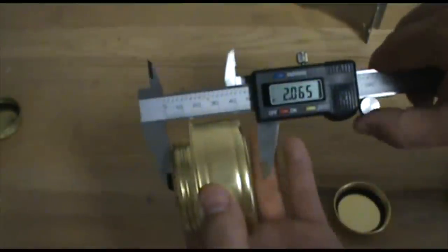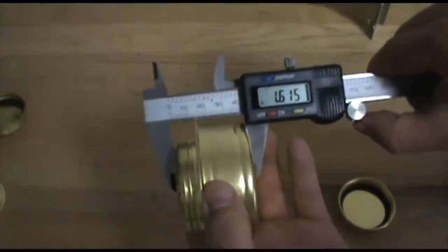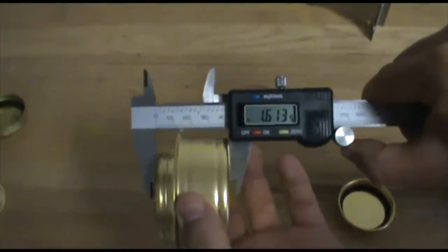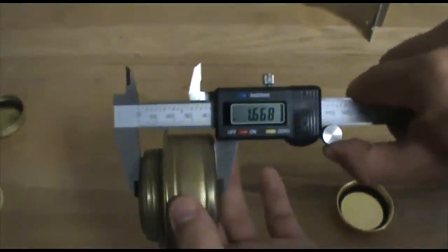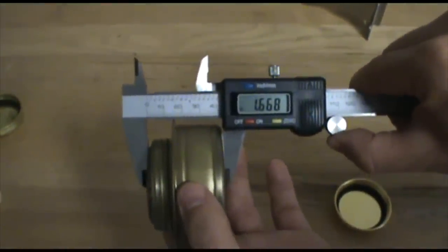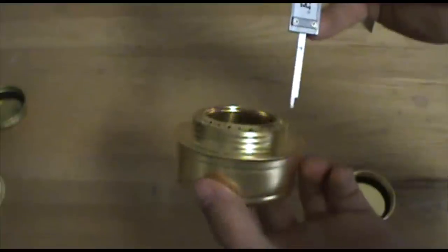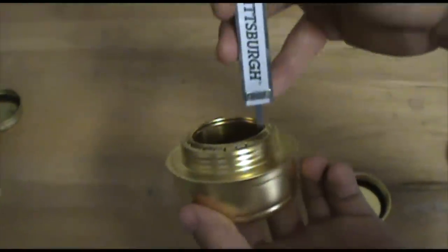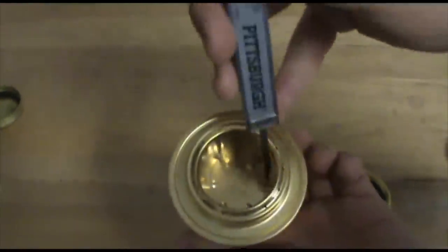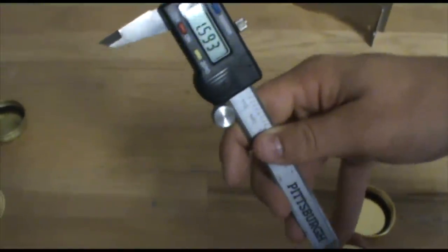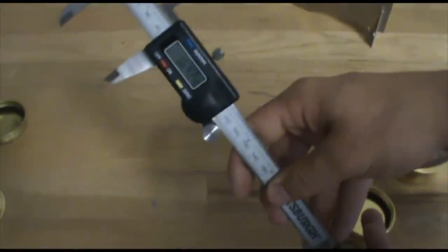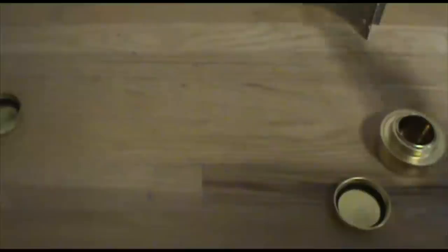The total height of the stove for the Esbit is 1.61, 1.67 for the Trangia. The depth from the top of the burner to the inside of the base there, 1.59 for the Esbit. And for the Trangia, 1.64. Small difference there.